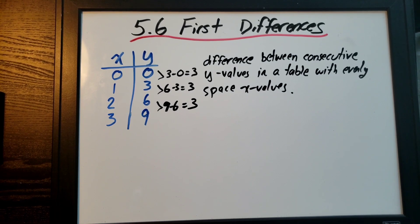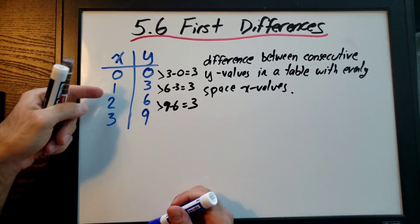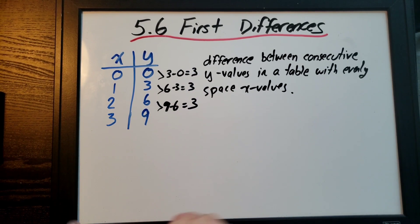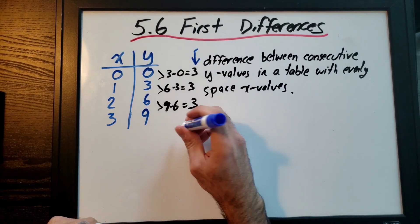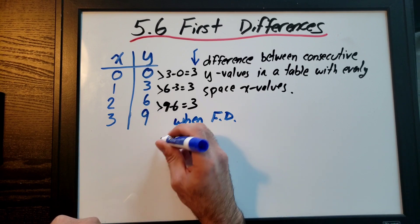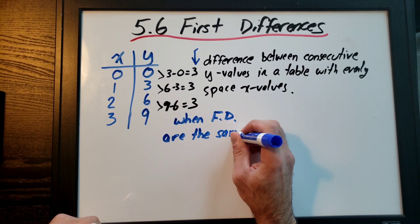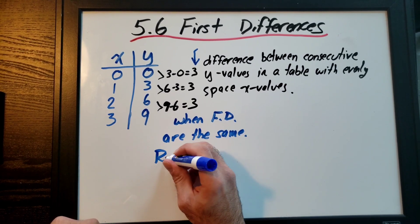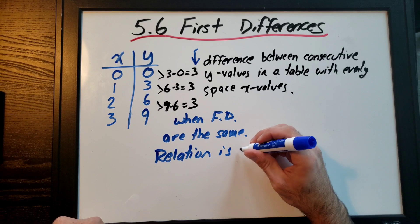Now first differences tells us how much it's going up every time. For every 1, we're going up 3. And when these numbers, this first difference column, when these are all the same, so when first differences are the same, we know that the relation is linear.